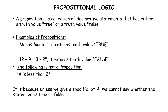Examples of propositions: if I say 'a man is mortal', this is a true statement because a man is not immortal — we are all mortal. So the propositional statement is 'man is mortal' and its truth value is true. Similarly, if I say '12 plus 9 is equal to 3 minus 2', now 12 plus 9 gives 21 and 3 minus 2 gives 1, so 21 is not equal to 1. This is a proposition and its truth value is false.